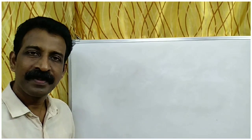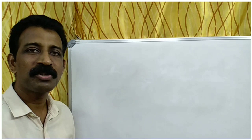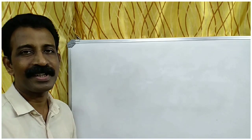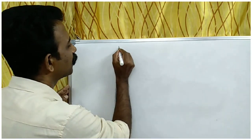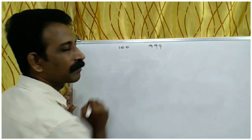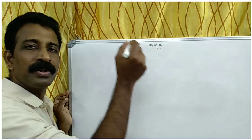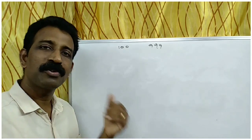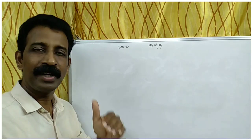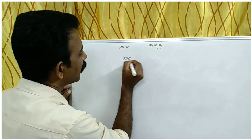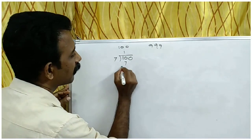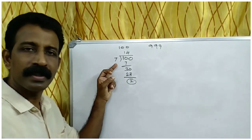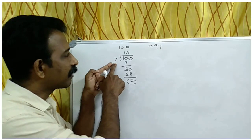The 4th question: how many 3-digit numbers are there which leave a remainder of 2 when divided by 7? Three-digit numbers range from 100 to 999. The first 3-digit number which leaves a remainder of 2 when divided by 7 is 100, so the first term T1 is 100.